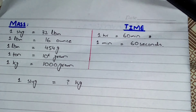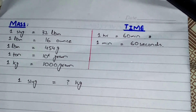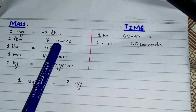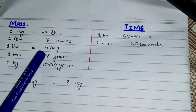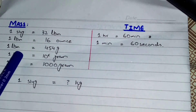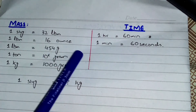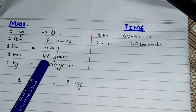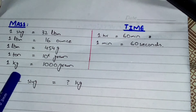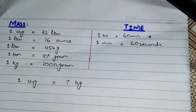If we talk about mass, the most common units are slug, lbm, ton, kg, ounce, and gram. I have written all the conversions here: one slug equals 32 lbm, one lbm equals 16 ounce, one lbm equals 454 gram, one ton equals 10 to the power 6 gram, one kg equals 1000 gram. You have to remember these conversions by heart because they are very important.